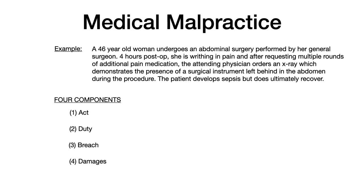Let's dissect this example and identify the four components of medical malpractice. The first is the act — in this example, the act is the abdominal surgery. The act and the breach are often very closely interrelated; in reality, the act is a negligent act which deviates from the standard of care, and that second part is the definition of a breach. For simplicity, the act here is the abdominal surgery.